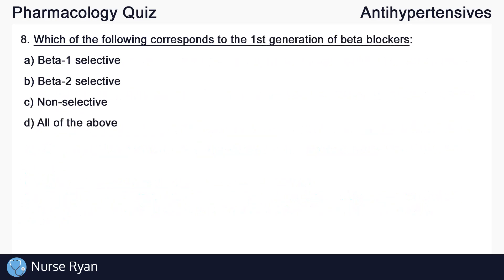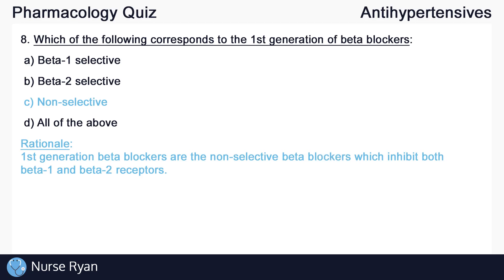Moving on to question number eight: which of the following corresponds to the first generation of beta blockers? The answer here is C — non-selective. First generation beta blockers are the non-selective beta blockers, which inhibit both beta 1 and beta 2 receptors.